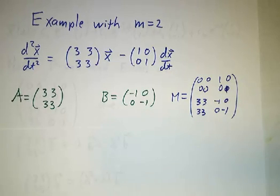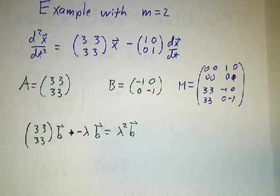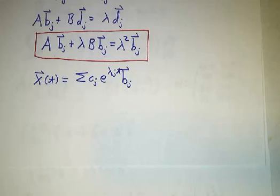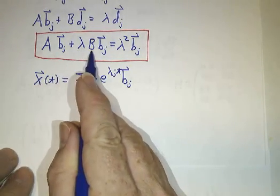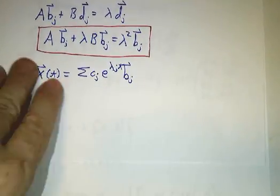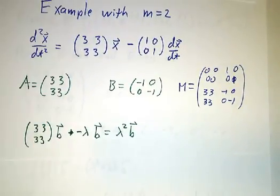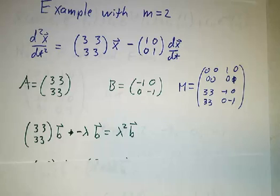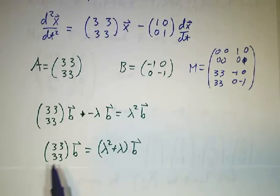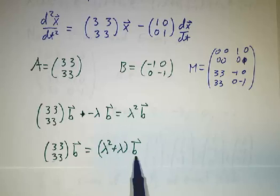Now who's up for diagonalizing a 4×4 matrix? Well, didn't hear very many voices, so let's go ahead and do it using this equation. We take AB plus λ, big BB equals λ squared b. So we're trying to solve this times b minus λ times b is λ squared times b. Okay. In other words, 3333 b is λ squared plus λ b.